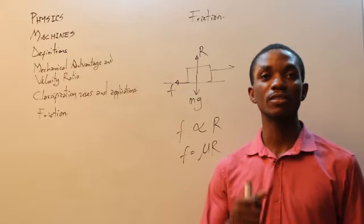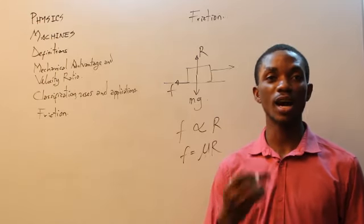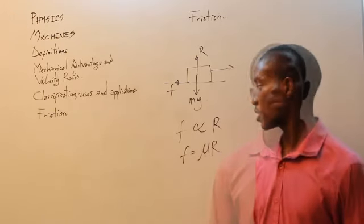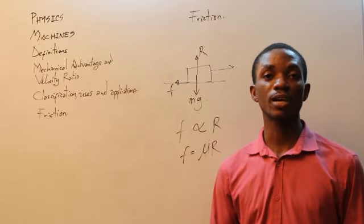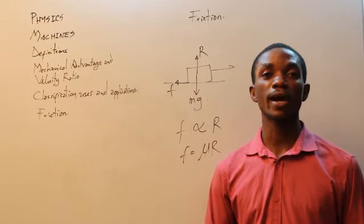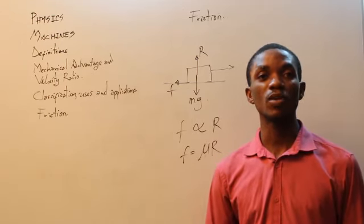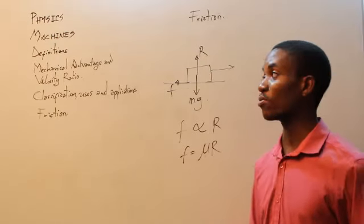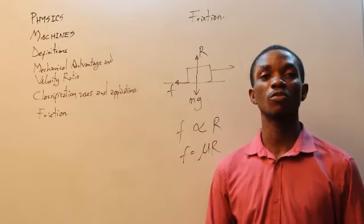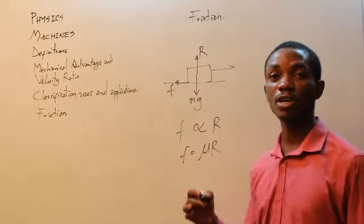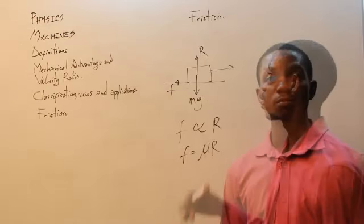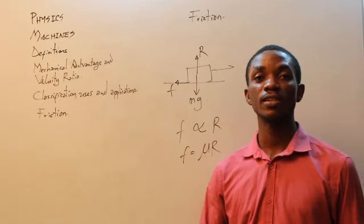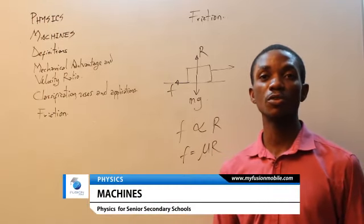In summary: velocity ratio for the hydraulic press is calculated by R squared of the effort divided by R squared of the load. In the screw, velocity ratio is calculated by the formula 2 pi A divided by P, where A is the arm length and P is the pitch of the screw. We talked about friction and defined it as the opposition to the free movement of objects. We also talked about normal reaction and how friction comes about. In a few seconds, some questions will show on your screen — please answer them. If there is anything you feel you do not understand, you can go over the video one more time.